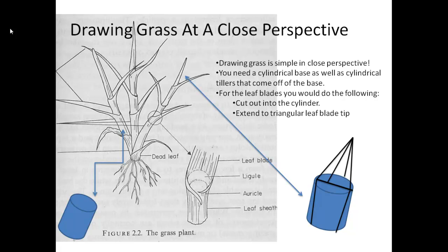Then you want to extend to a triangular leaf blade tip. One should note that the cut out of the cylinder depends on where the cylinder ends and starts to turn into the leaf blade.